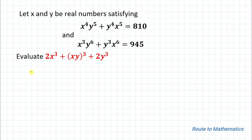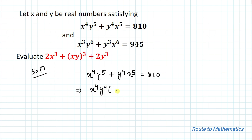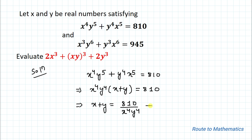So we have two equations and we are asked to find the value of the given expression. Without any delay, let's start the solution. Our first equation is x⁴y⁵ + y⁴x⁵ = 810. If I take x⁴y⁴ common, we have x⁴y⁴(x + y) = 810, which can be written as x + y = 810 divided by x⁴y⁴. Let's call this equation 1.